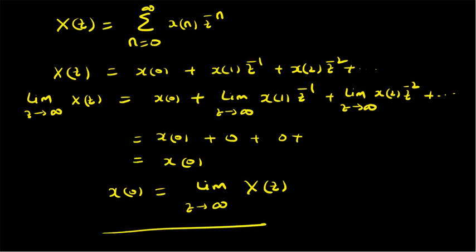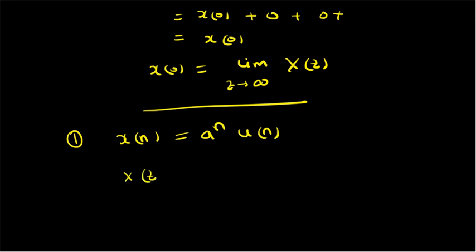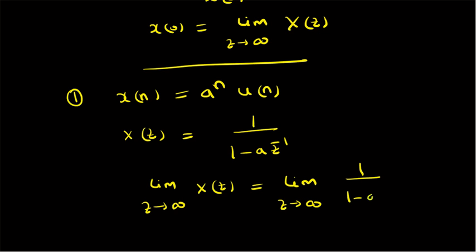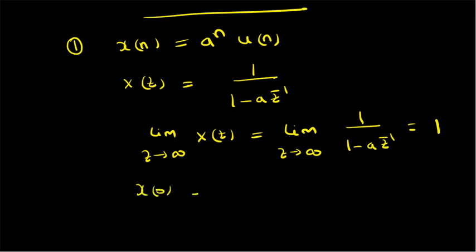That is the initial value theorem. Now let us look at a few examples that illustrate this theorem. The first one: we have a signal X of N which is equal to A power N times U of N, and the corresponding Z-transform is X of Z equal to 1 by 1 minus A Z inverse. By applying the initial value theorem, limit Z tends to infinity of X of Z equals limit Z tends to infinity of 1 by 1 minus A Z inverse. Applying this limit, this term becomes 1 by 1, that is 1. When we verify this with the original signal, X of 0 is equal to A power 0 times U of 0, which is basically 1. So indeed X of 0 is equal to 1.